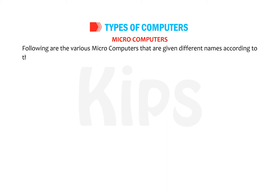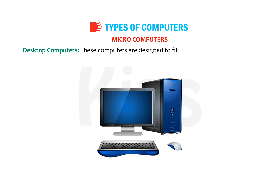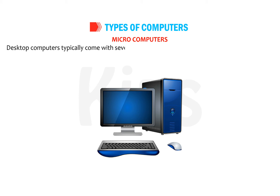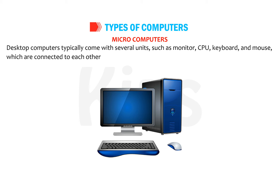Desktop Computers: these computers are designed to fit comfortably on top of a desk. Desktop computers typically come with several units such as monitor, CPU, keyboard and mouse, which are connected to each other and work like a single unit.